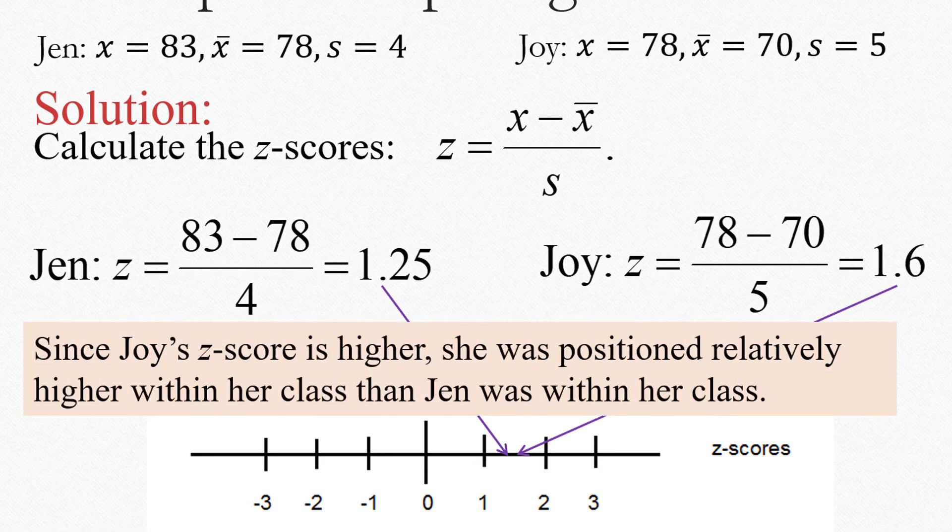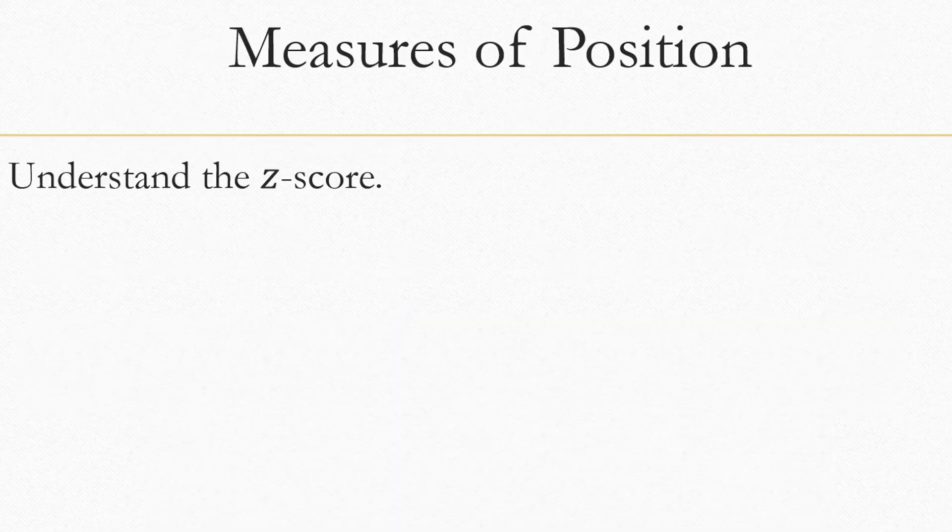So despite the fact that Jen had the higher raw score of 83, it appears Joy's test might have been a little bit harder. And scoring a 78 actually puts her above more of her classmates.